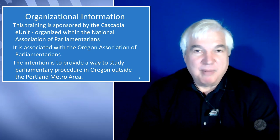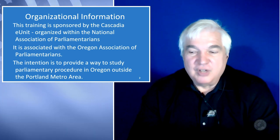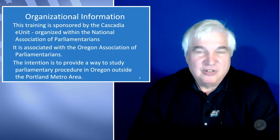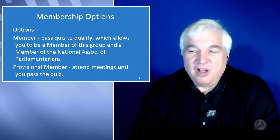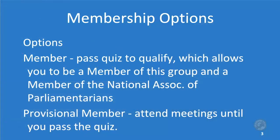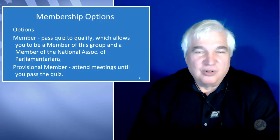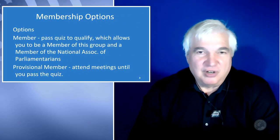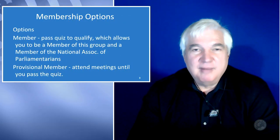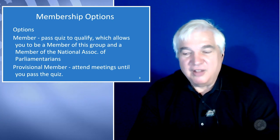As for membership options, you can become a full member of the group by passing a quiz showing fundamental understanding and comprehension of parliamentary procedure, which makes you a member of the National Association of Parliamentarians. Or, before passing the quiz, you can become a provisional member, which allows you to attend meetings, vote, and learn about this material from other parliamentarians, and then you pass the quiz.